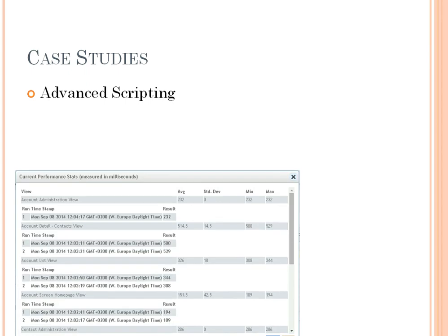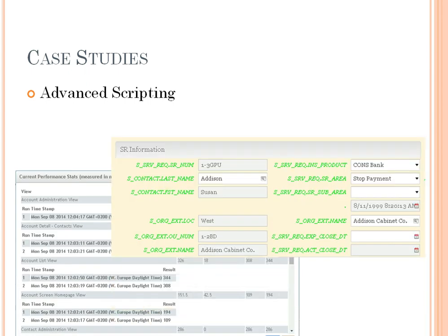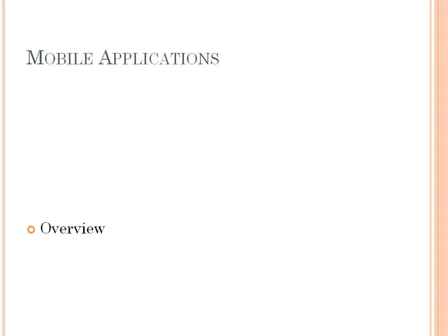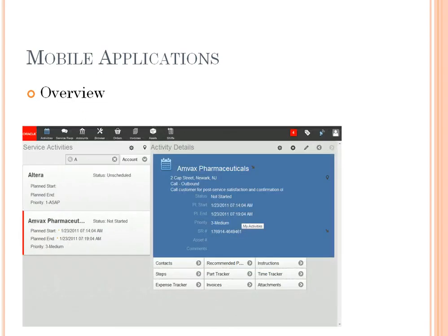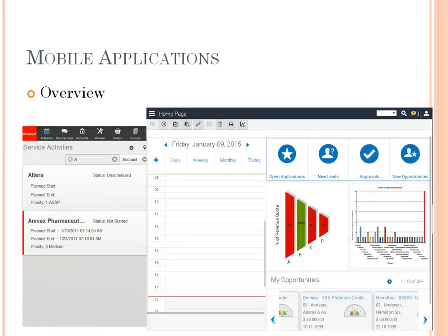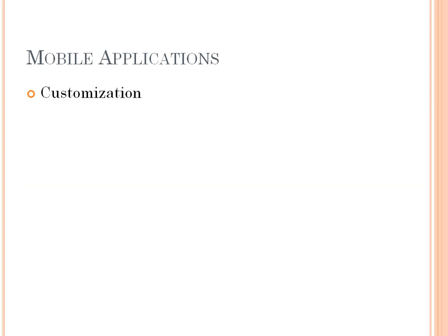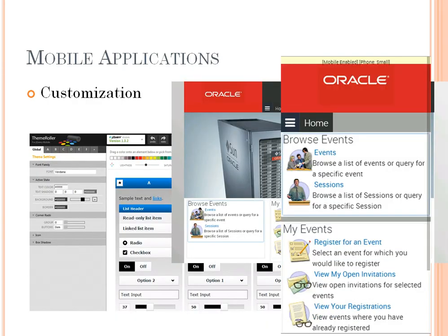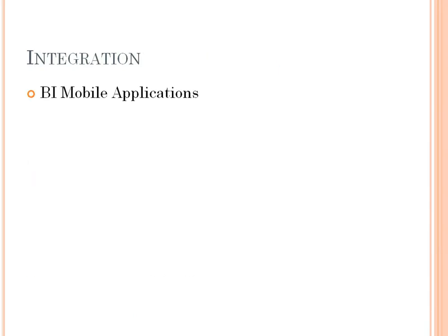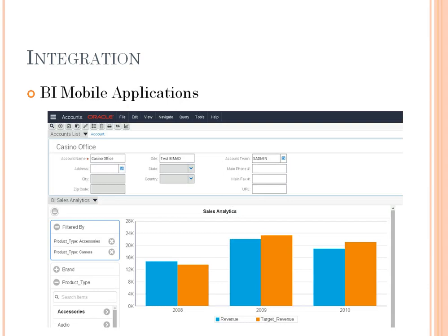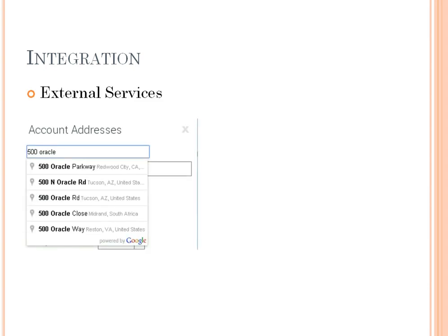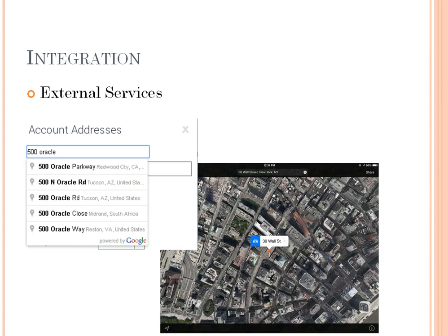There's also some advanced scripting, like measuring performance and displaying repository data. We don't leave out mobile applications — we give an overview covering IP 2014 and provide customization options like theming and creating custom mobile applications. Integration scenarios include integration with BI mobile applications, external services like the Google Maps API, or Apple Maps on the iPad.